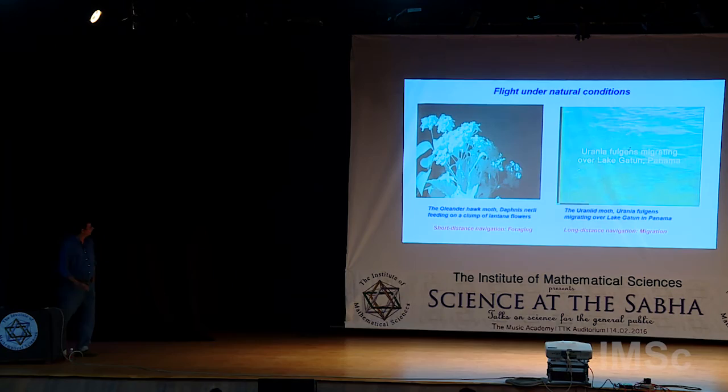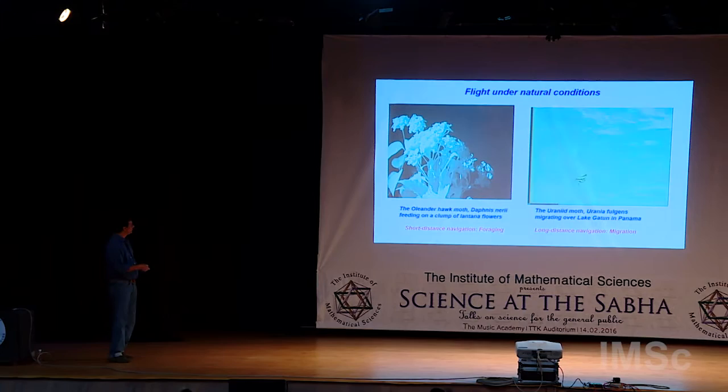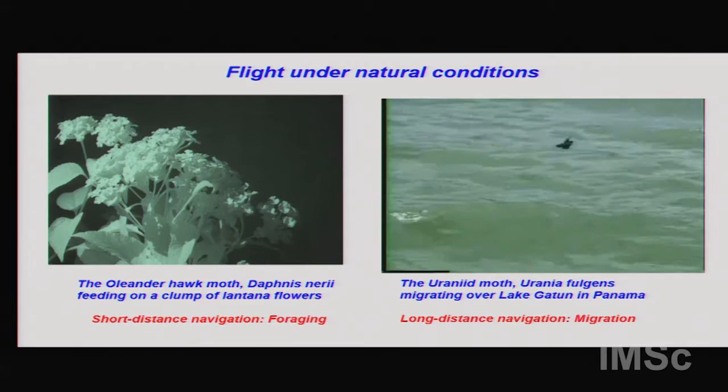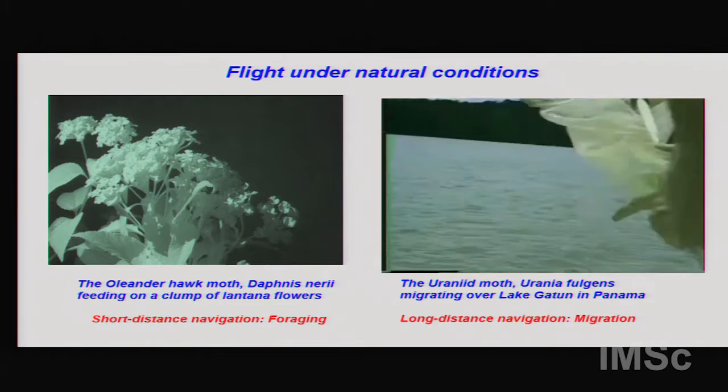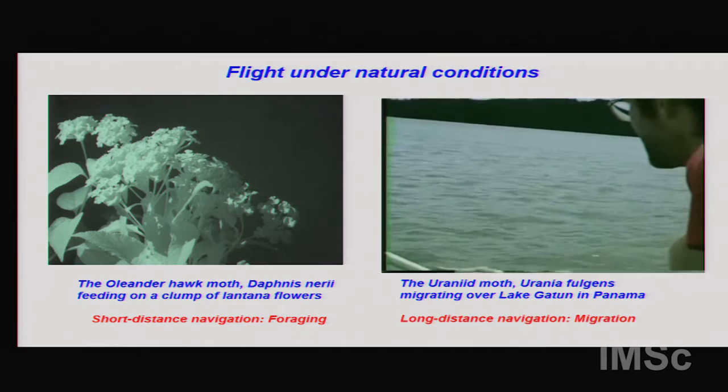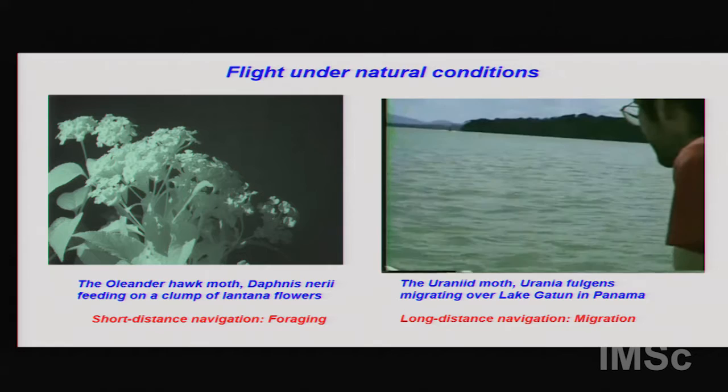Here's another insect I study in Panama: a moth called Urania fulgens, which migrates long distances from the north of Colombia to the south of Mexico across the Central American strip. My collaborator and I chase these in motorboats — he balances on the prow of a boat on water that has crocodiles — and then we do experiments with the captured moths. It can get pretty exciting.